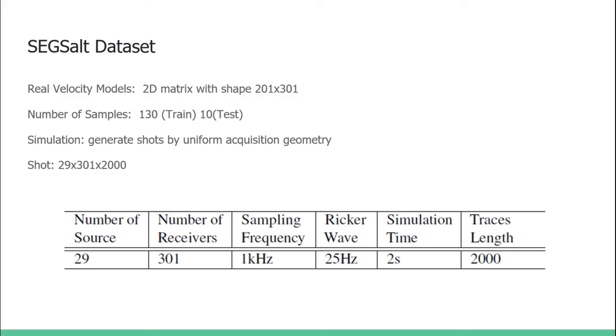The second dataset contains real velocity matrix in 2D. There are 130 training samples and 10 testing samples. We follow the literature and generate raw shots by uniform acquisition geometry. The final shape of shots are 29 by 301 by 2000.